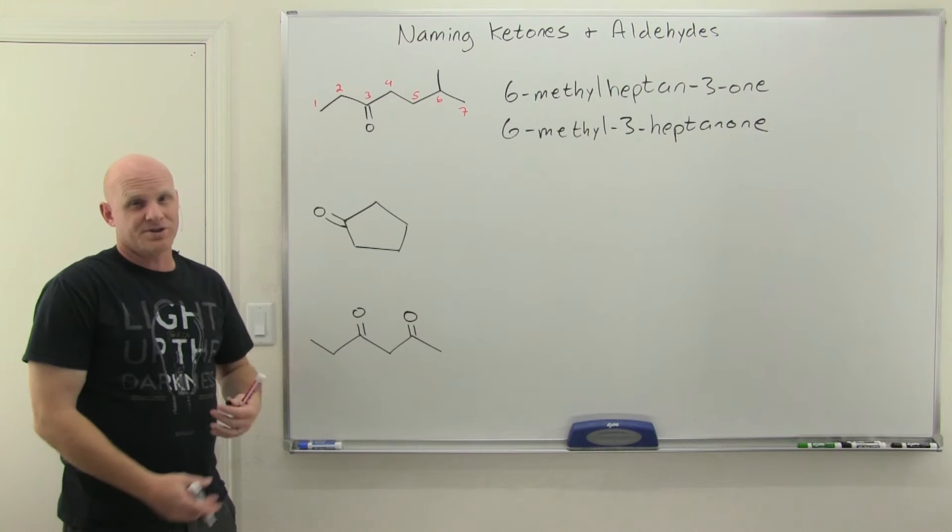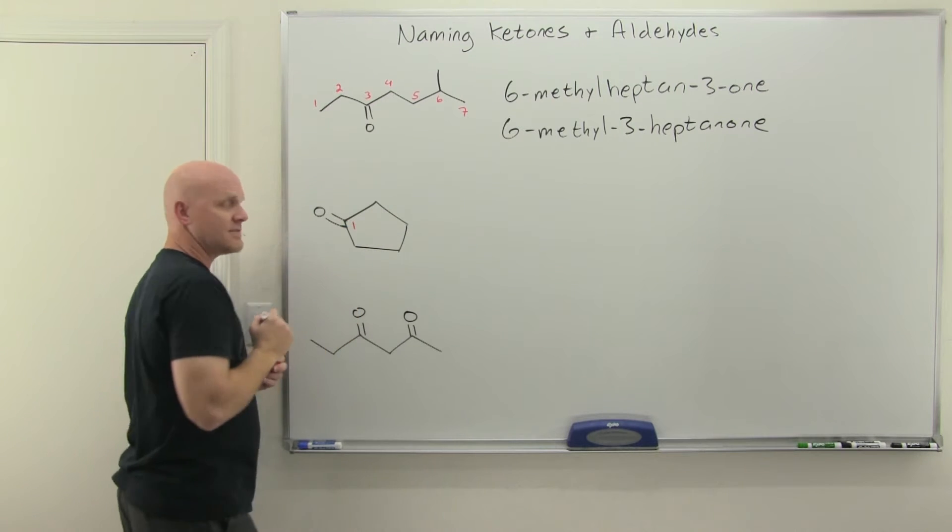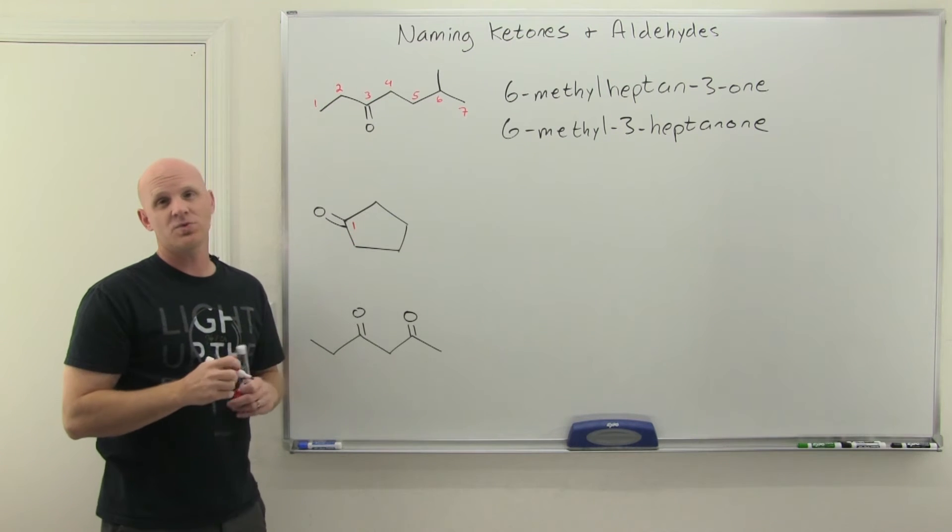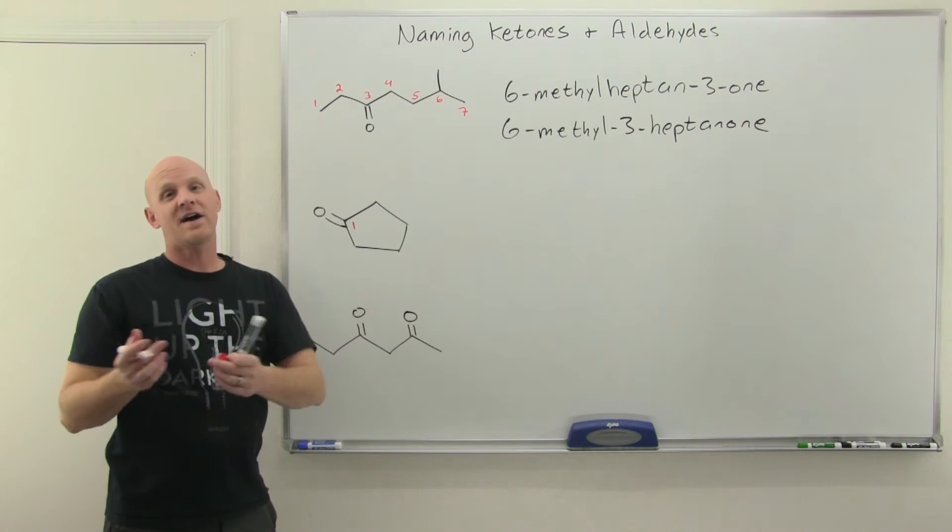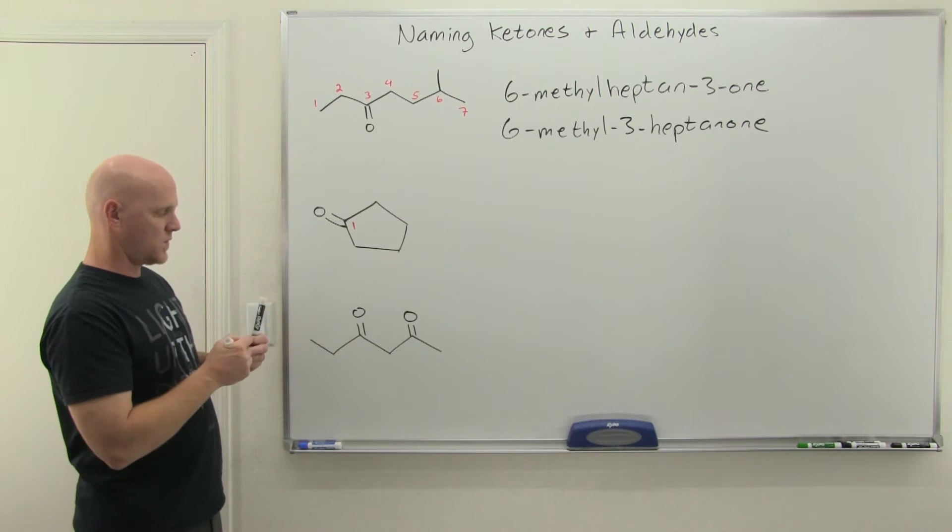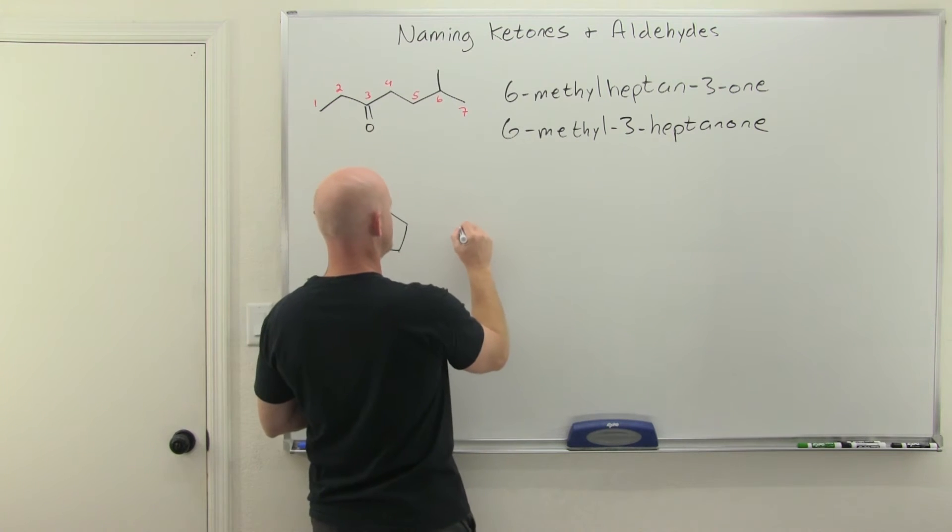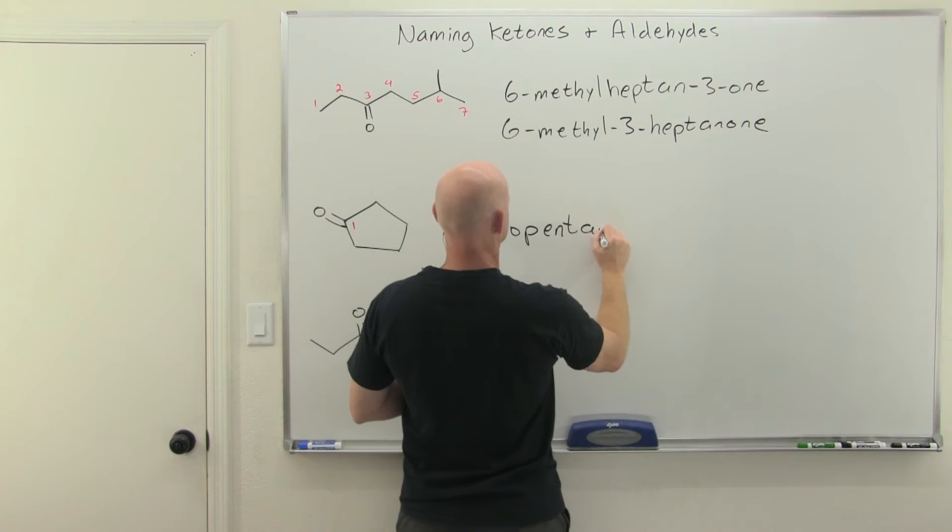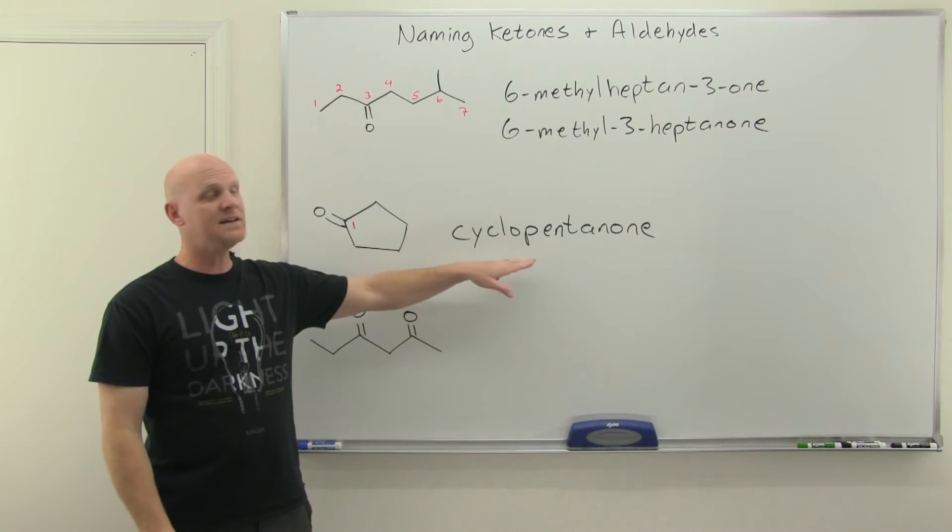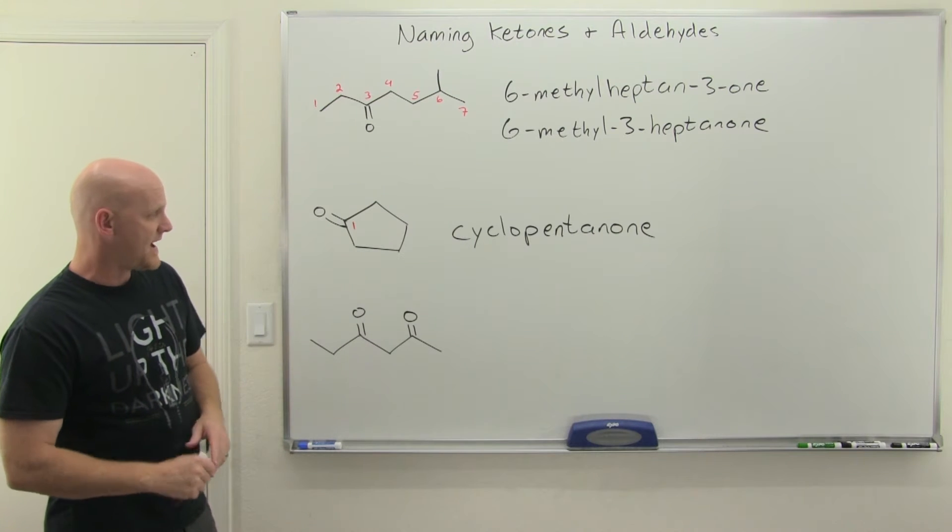What if it's part of a cyclic structure? It turns out it doesn't really change much. But in this case, with the ketone on the ring, that by definition is going to be carbon one. Whether we go clockwise or counterclockwise, it wouldn't make a difference. If there were a substituent on this ring, then we would number it clockwise or counterclockwise to get that substituent the lowest possible number. But the ketone is the major functional group, it would be at carbon number one. In this case, this is just a parent chain of cyclopentane. So this is just cyclopentanone. Because on a ring, the ketone had to be located at position one, we leave it out of the name.